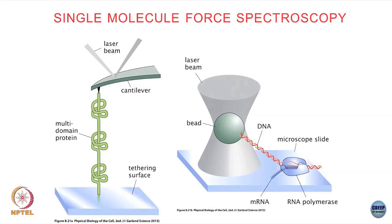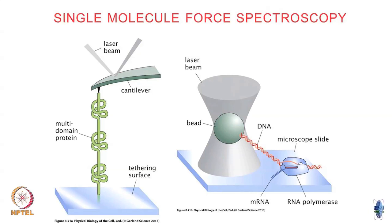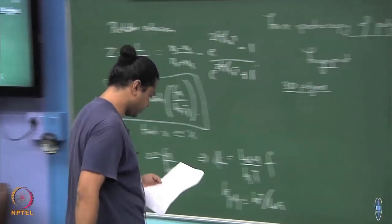In the AFM setup, one end was fixed and the other end was pulled with a particular force. You could also pull both ends depending on the experimental setup — you might need to alter the calculation slightly. One thing is that I did this for a 1D polymer; you can actually do this for a 3D polymer in a similar way, because in reality the DNA you are pulling is a 3D polymer.